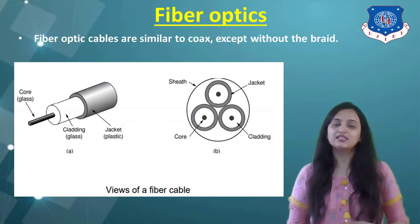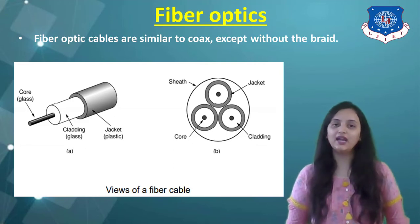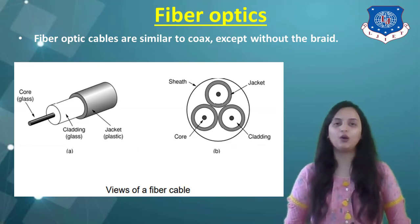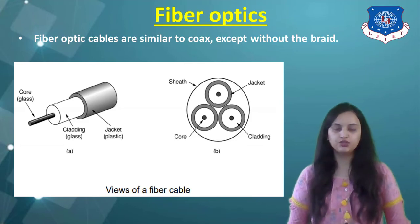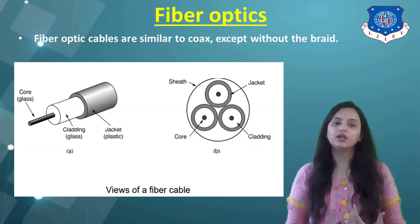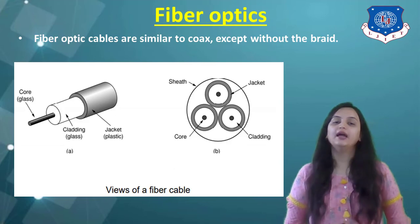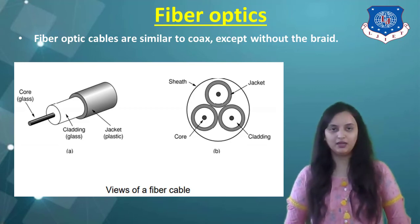In the fiber optic diagram, two views are shown. Figure A is the side view and Figure B is the cross-section view. From Figure A, there is a core of glass material, above which the cladding is also of glass material. Above the cladding, a plastic jacket is provided. In the cross-section view in Figure B, the core, cladding, jacket, and protective plastic sheet are indicated.